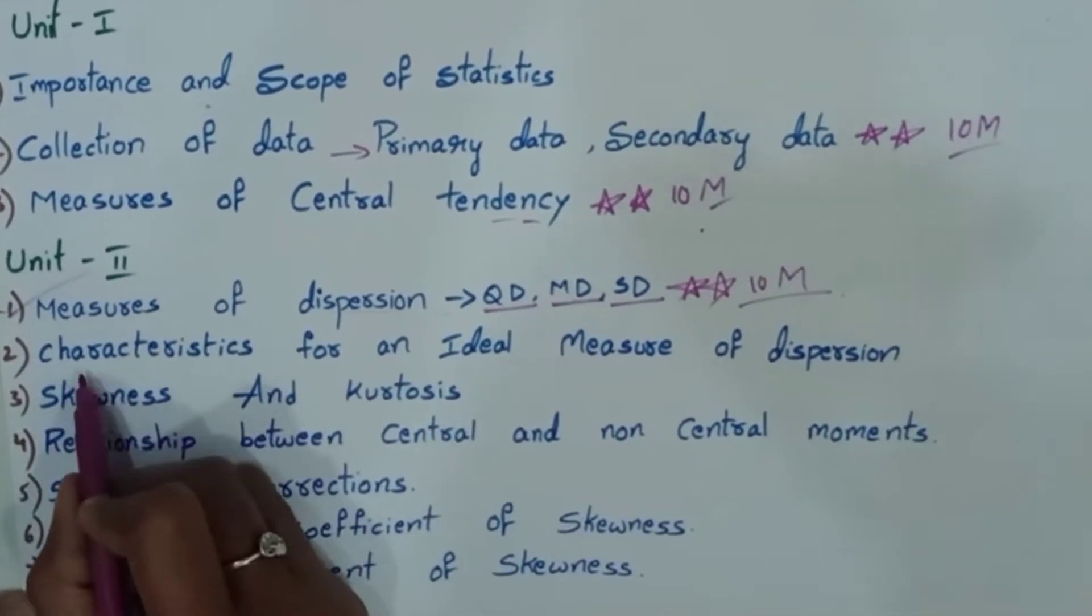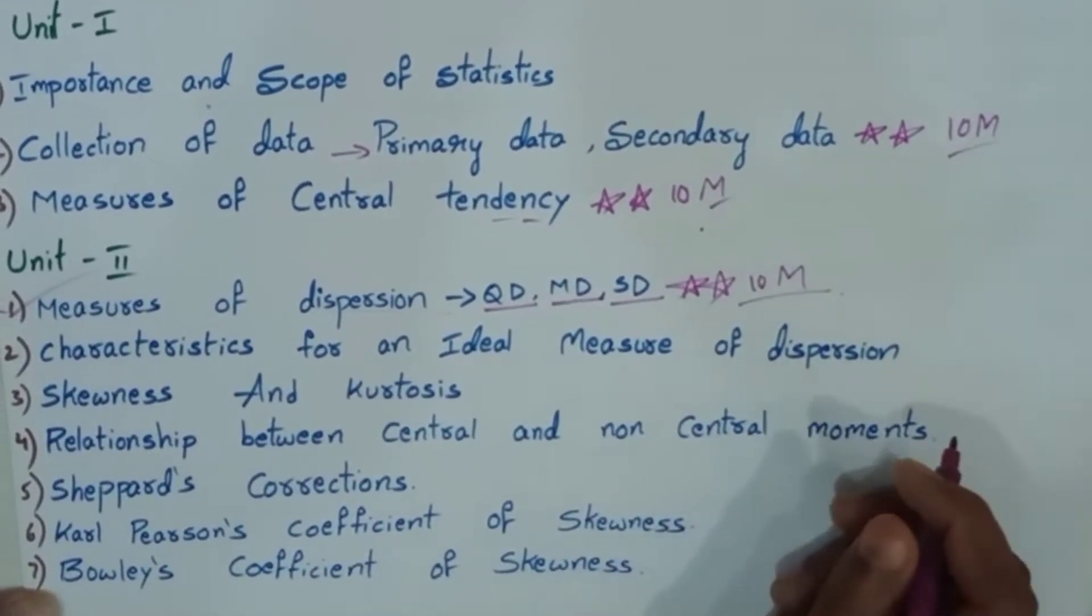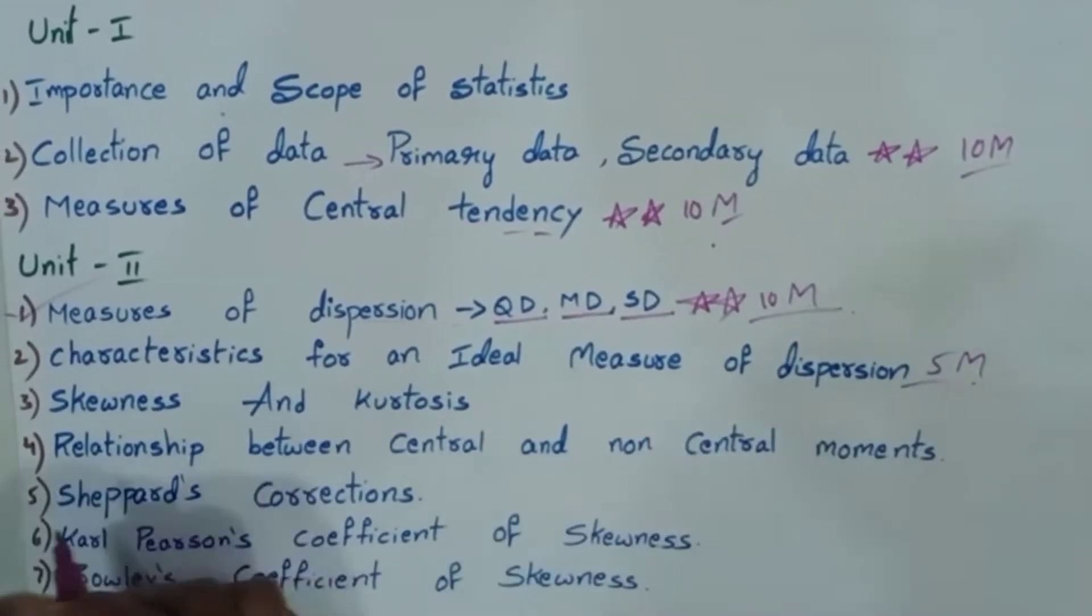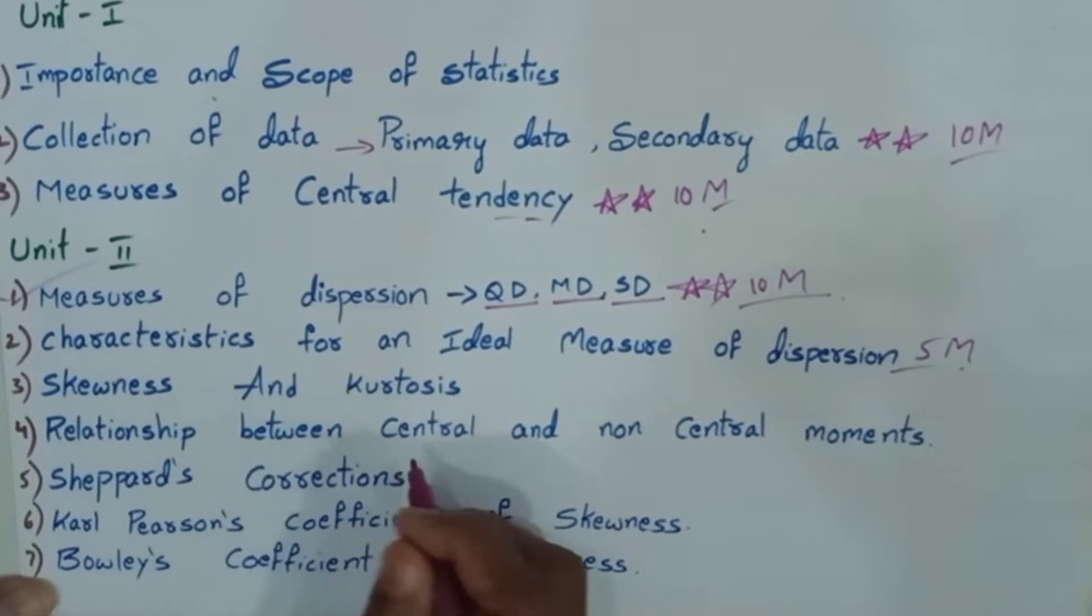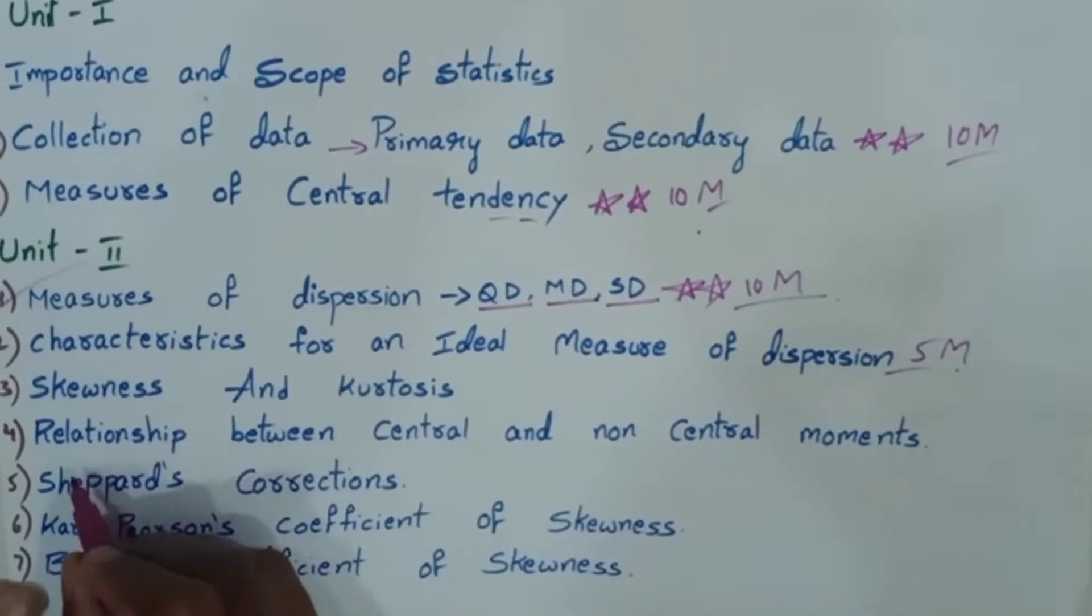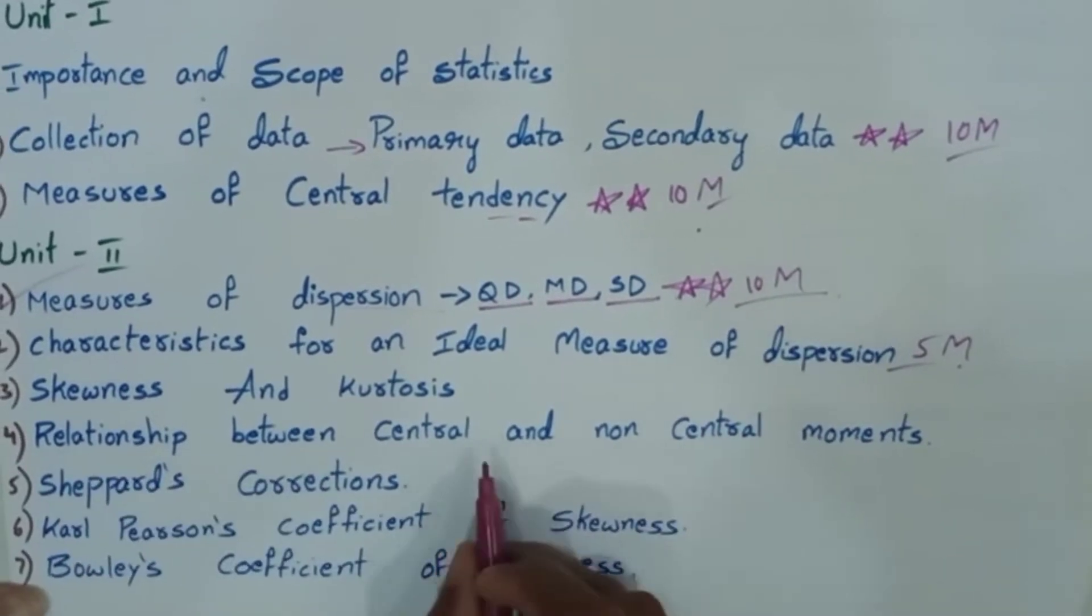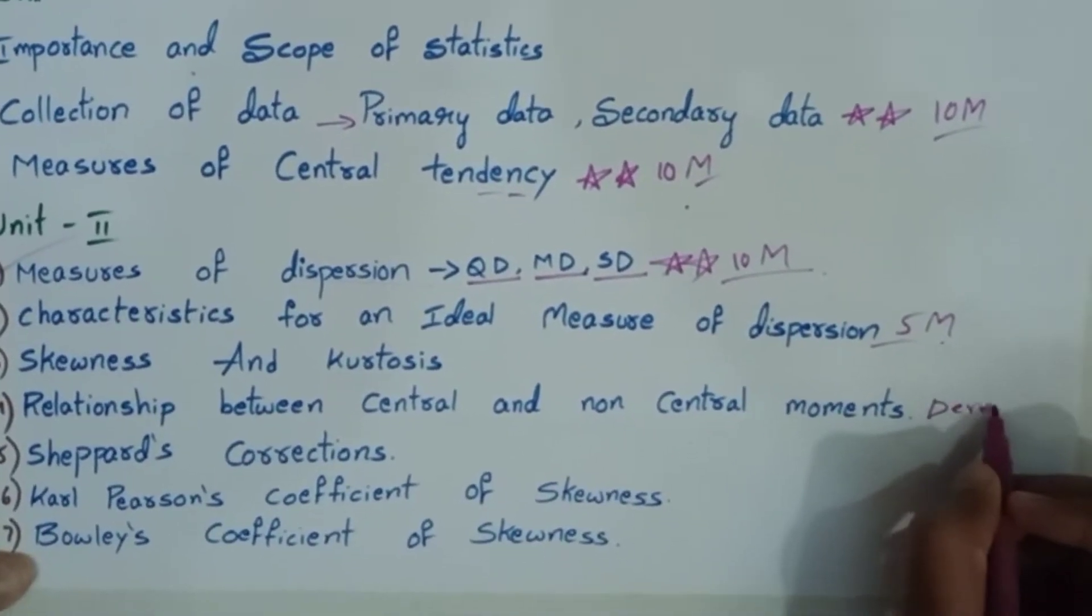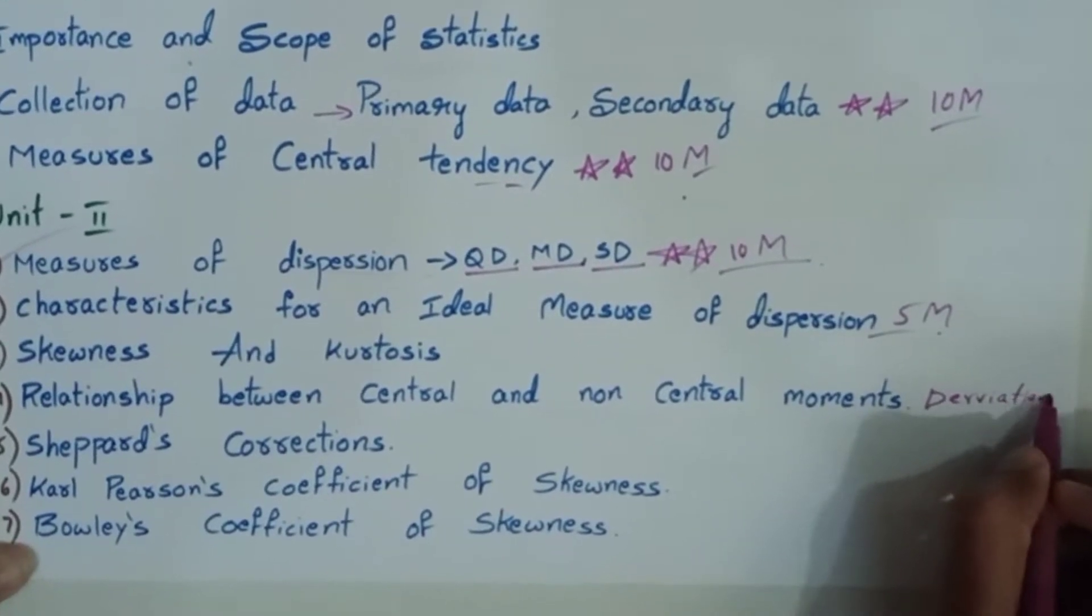Next, characteristics for an idle measure of dispersion. This is a very important question. Next, skewness and kurtosis. What is definitions and types of skewness? Next, relationship between central and non-central movements. This is a derivation part. Theorem. That is a little more important.